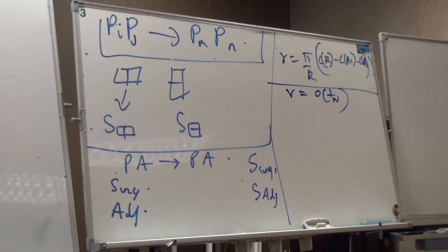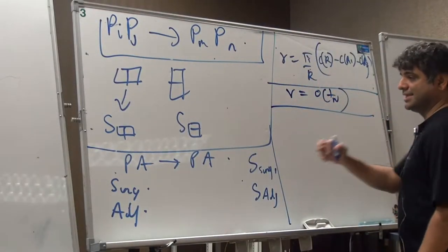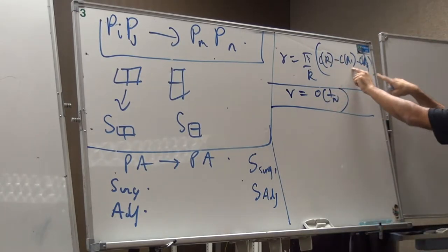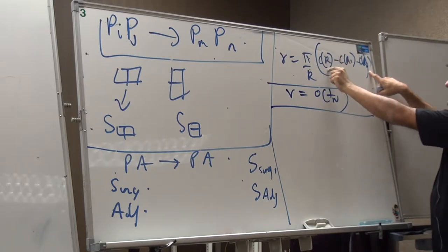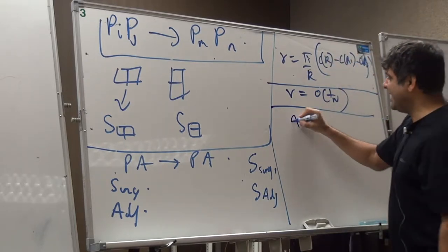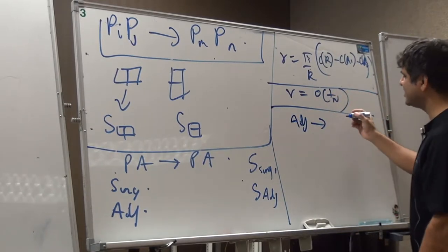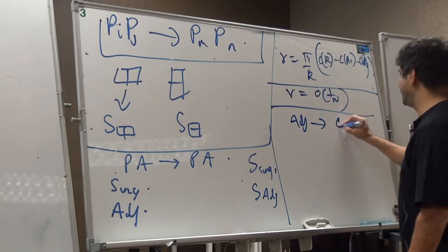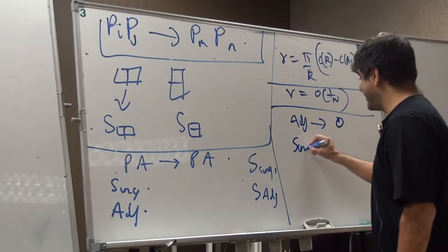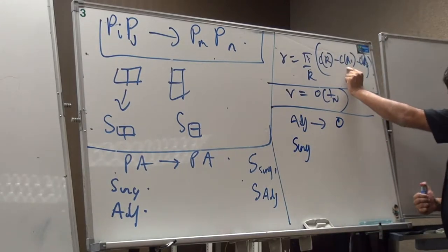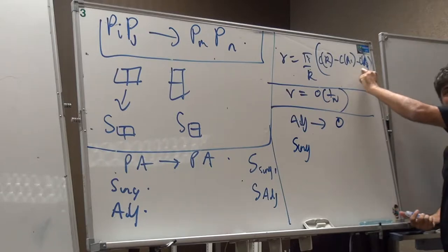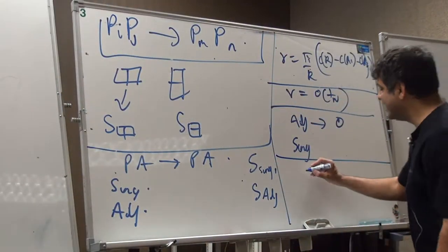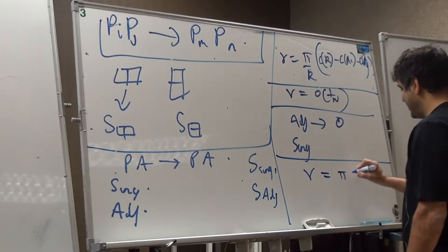In the particle-antiparticle scattering processes, if we get the adjoint, that's once again 2 minus 1 minus 1, so the adjoint also has nu of order 1/N squared — essentially 0 in the large N limit. But for the singlet, the number of anti-boxes is 1 and number of boxes is 0, so nu turns out to be pi times lambda, where lambda is N divided by the level k.